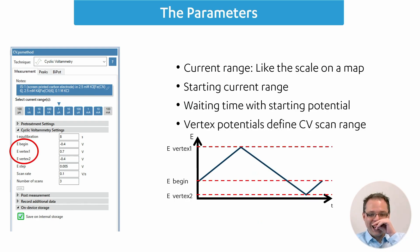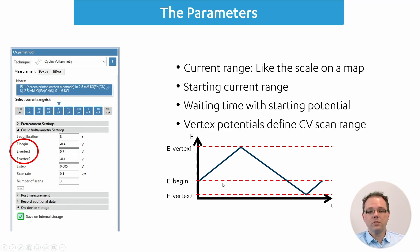The next parameters are all potentials: E-begin, which is where the measurement starts, and then the two vertex potentials — these are the two potentials where we change the scan direction in the cyclic voltammogram, going from plus to minus or minus to plus. You go from E-begin to the first vertex potential, then with the same slope into the other direction, then to the second vertex potential, and when you reach E-begin again, you've completed a full cycle or scan. These three potentials define the potential range you are scanning.